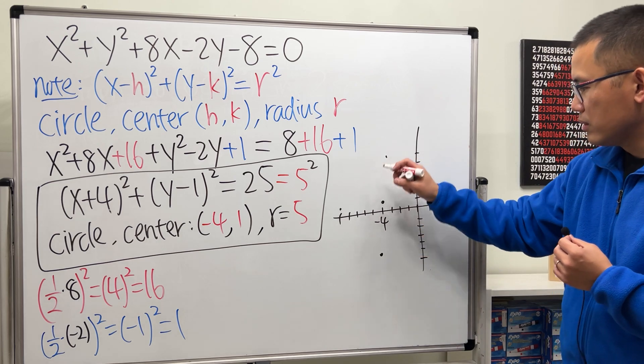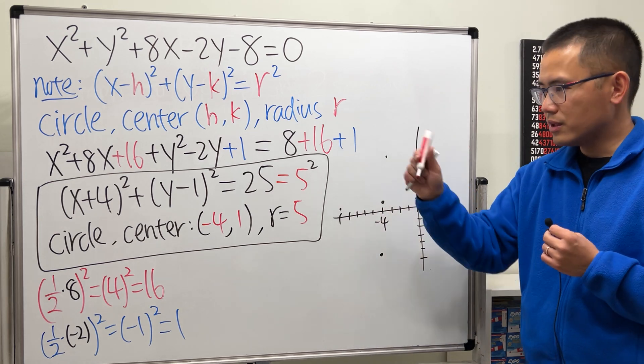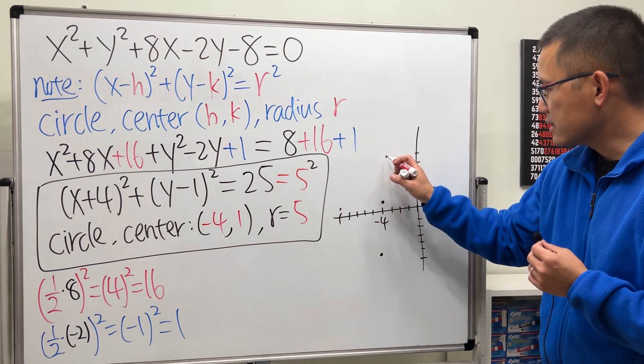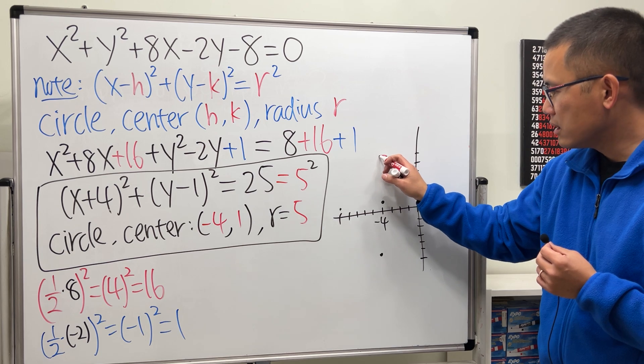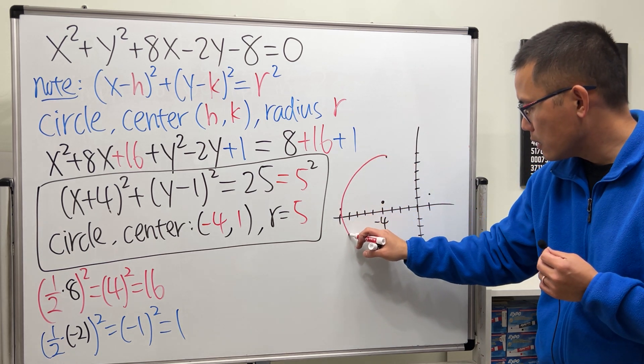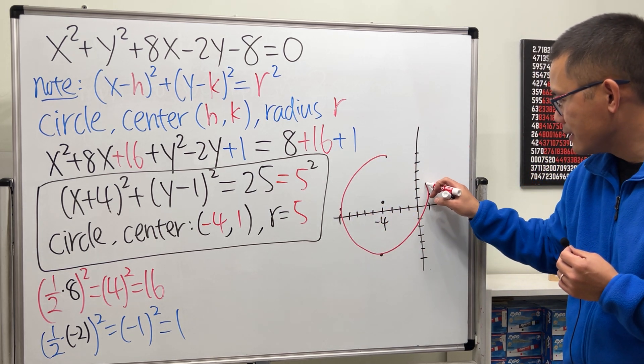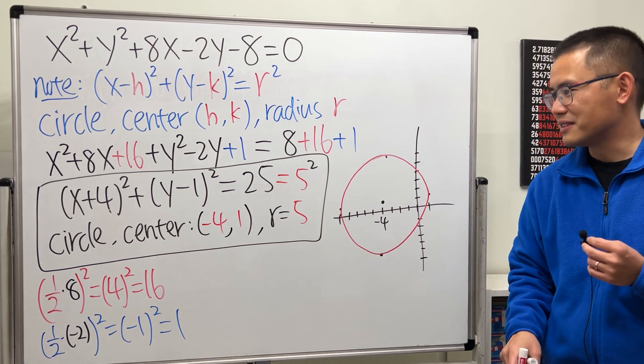Right here, do not draw a diamond though. No. Because it's a circle. Connect the dots. These are like your guide. There you go. That's a circle.